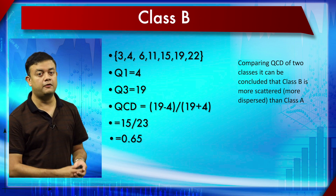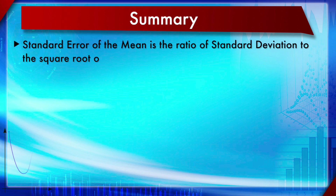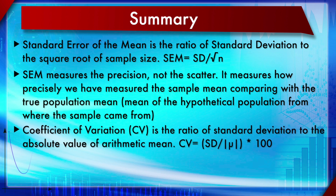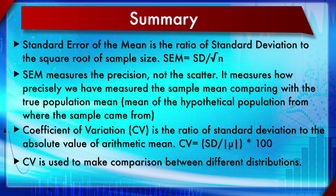In summary: Standard Error of the Mean (SEM) is standard deviation divided by the square root of n. SEM measures precision, not scatter — if you want to convey scatter, use standard deviation. SEM tells you how precisely the sample mean has been determined relative to the true population mean. Coefficient of Variation (CV) is SD divided by the absolute value of the arithmetic mean, and is used to compare across different distributions.